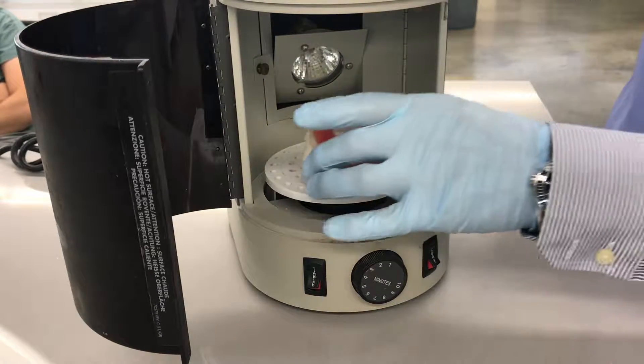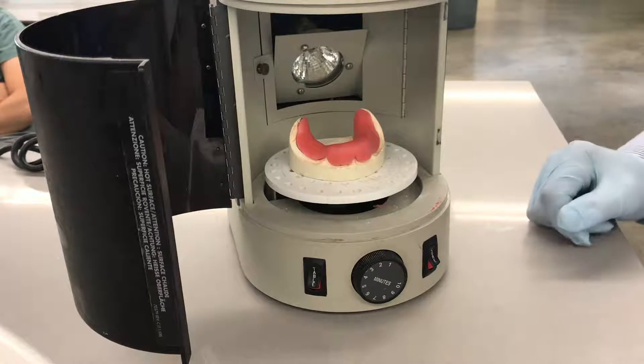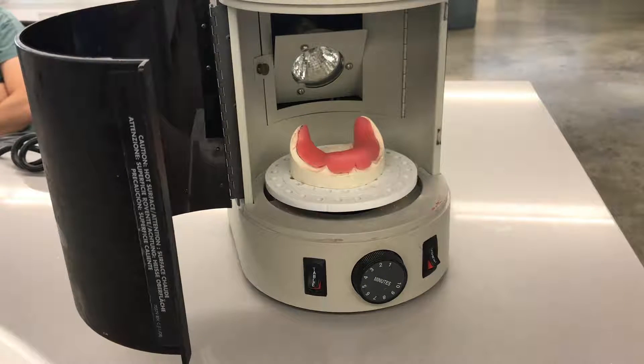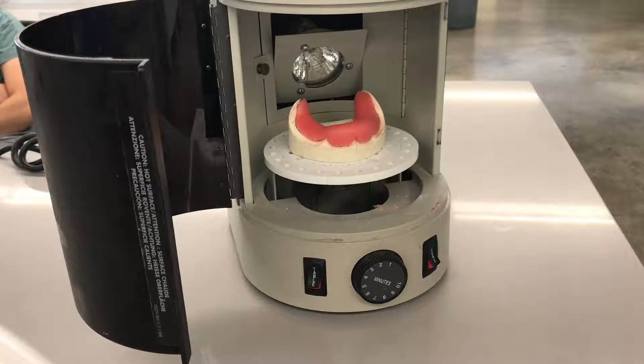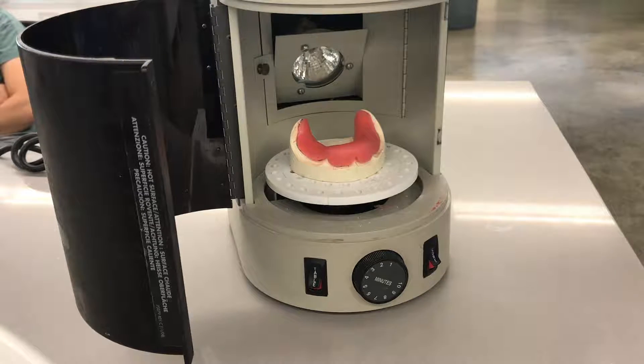So when you're placing the tray inside and center to the table, when the light comes on, you can raise it or lower it to maximize the exposure to the light.